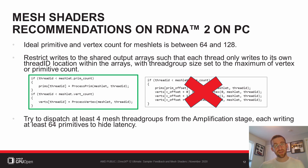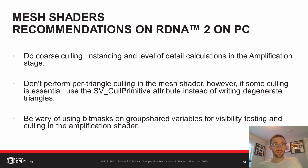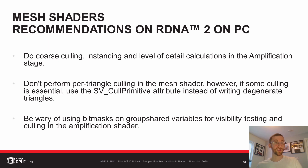To hide latency when launching Mesh thread groups from the amplification stage, dispatch at least 4 Mesh thread groups outputting a minimum of 64 primitives at a time. Do coarse culling, instancing and level of detail calculations in the amplification stage. Don't perform per-triangle culling in the Mesh Shader as the overhead of the additional computation in the mesh shader can often negate the benefit. However, if culling primitives in the Mesh Shader is essential, utilize the SV_CullPrimitive attribute. This can be much faster than writing degenerate triangles. And be wary of using bitmasks on group shared memory for visibility testing and culling in the amplification shader, as it can open you up to LDS bank conflicts which can lower performance.